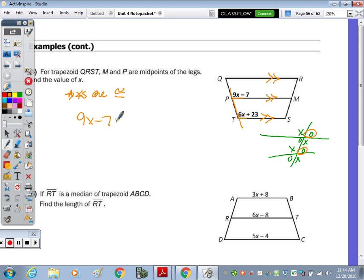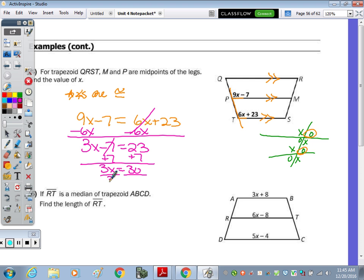If they're congruent, we set their measures algebraically equal. This is going to be 9X minus 7 equals 6X plus 23. That's how you set it up, and we'll just take the time to solve for X. You would minus the 6 from the 9, and you would get 3X. Then we add 7 to both sides. So now I have 3X equals 30, and then we finish by dividing by 3. X equals 10.